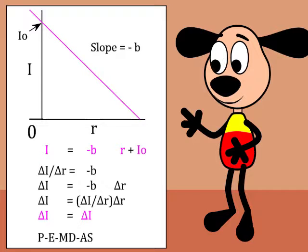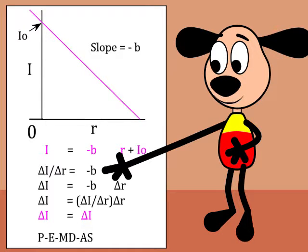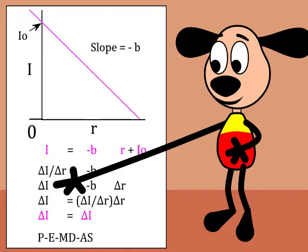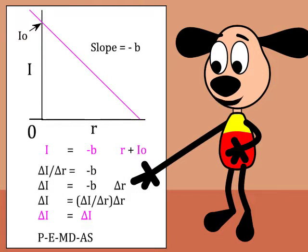Economists say that minus B is the interest sensitivity of investment, which is used to calculate the investment change due to an interest rate change.